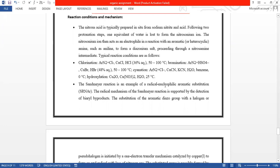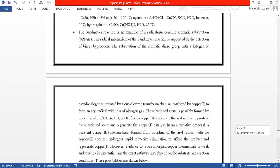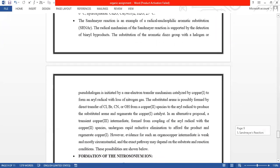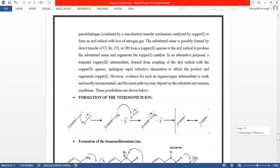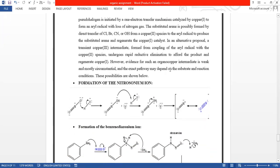The Sandmeyer reaction is an example of the radical nucleophilic aromatic substitution, which is also known as SRNAR. The radical mechanism for this Sandmeyer reaction is supported by the detection of bi-aryl byproducts. The substitution of the aromatic diazo group with halogen or pseudo-halogen is initiated by one-electron transfer mechanism, catalyzed by copper through the aryl radical with the loss of nitrogen gas. So let's have a glimpse over the steps of this mechanism.